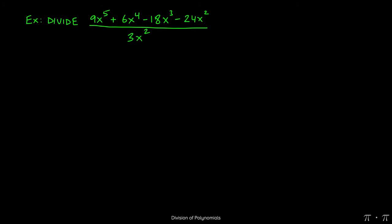Let's say we're asked to divide 9x to the fifth plus 6x to the fourth minus 18x cubed minus 24x squared by 3x squared.